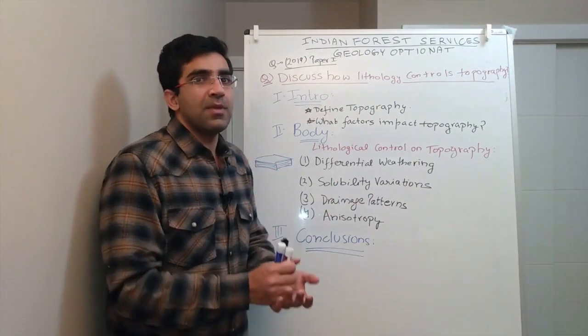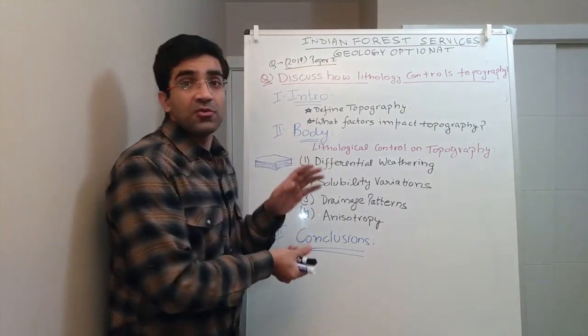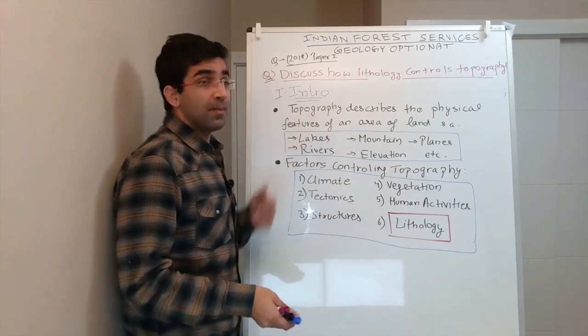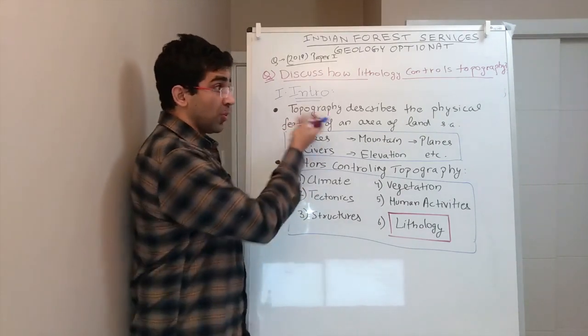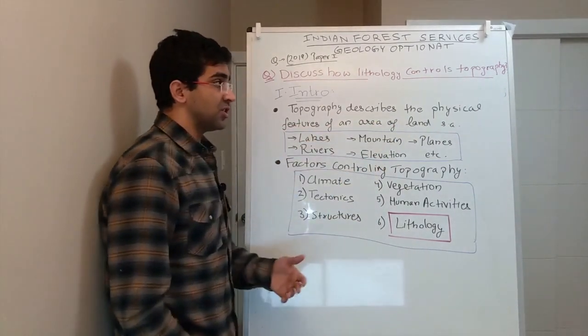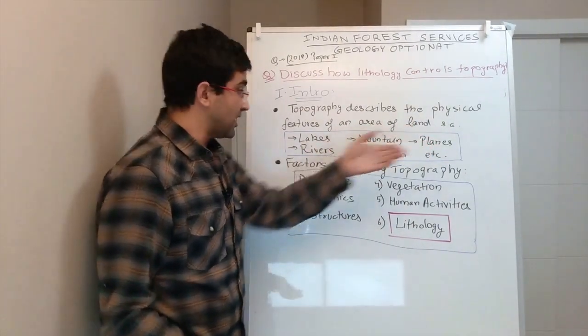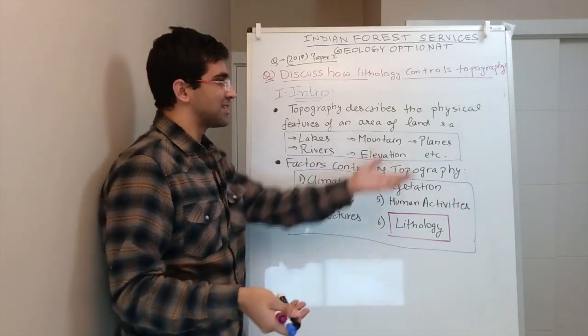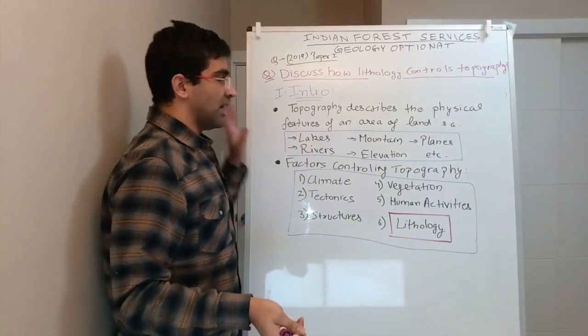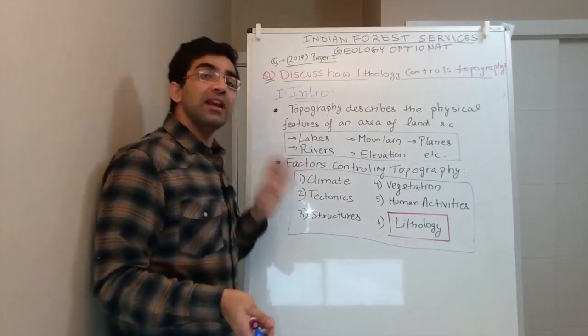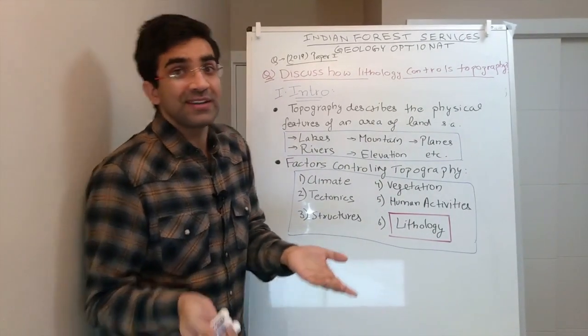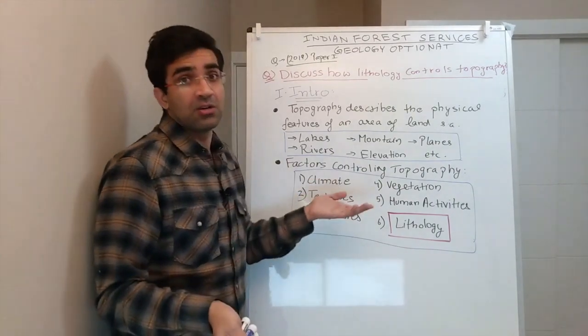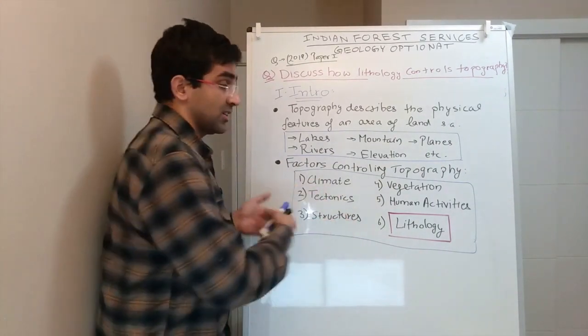Of course there could be others but depending on the answer that you have to write, if you write these factors it will be a very good answer. You will start your introduction by defining topography. Topography describes the physical features of an area of land such as these features are for example lakes, rivers, mountains, hills, plains, elevation etc. That is the definition of topography. Then you list down what are the factors which affect topography. These factors not in order of importance just listing them out.